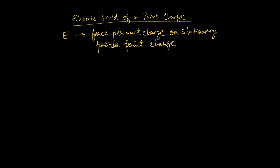From Coulomb's law, we can write the equation as Q1 times Q2 divided by 4 pi epsilon naught R squared. You know how to do this — but remember, this is for a system of two charged bodies.